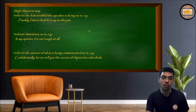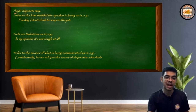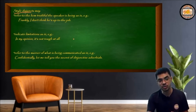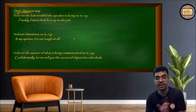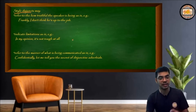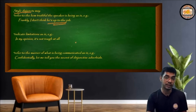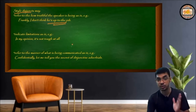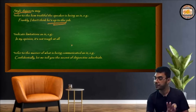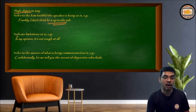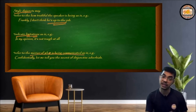How are disjuncts used? You may use them for style, so we call them style disjuncts. Style disjuncts may refer to how truthful the speaker is being. For example: 'Frankly, I don't think he's up to the job' — the speaker is being truthful here. With style disjuncts, we may also indicate limitations. For example: 'In my opinion, it is not tough at all.' Here, 'in my opinion' puts a limitation on the statement.